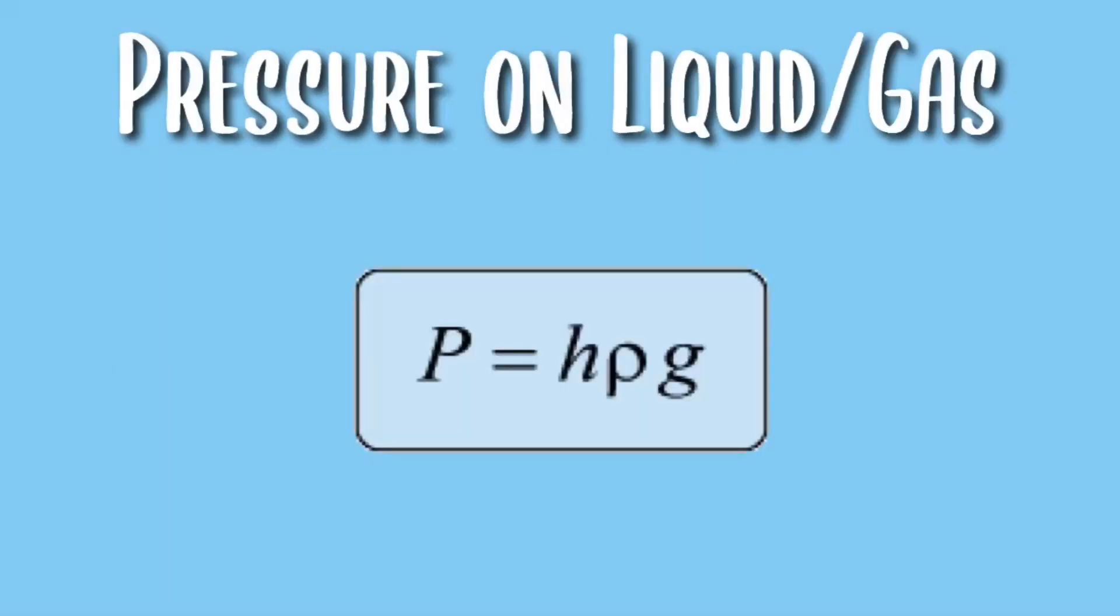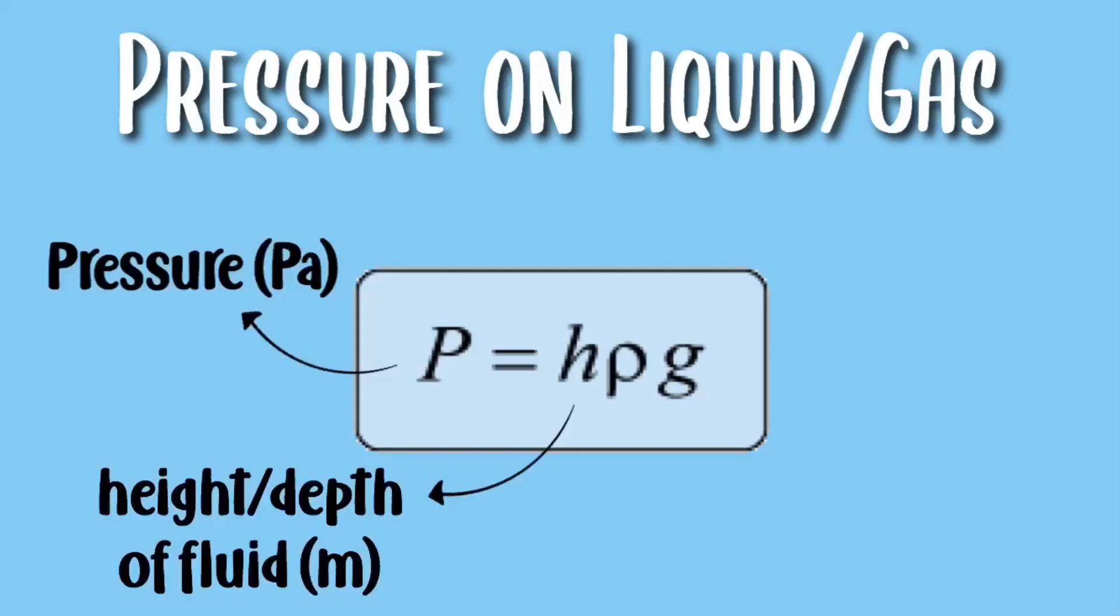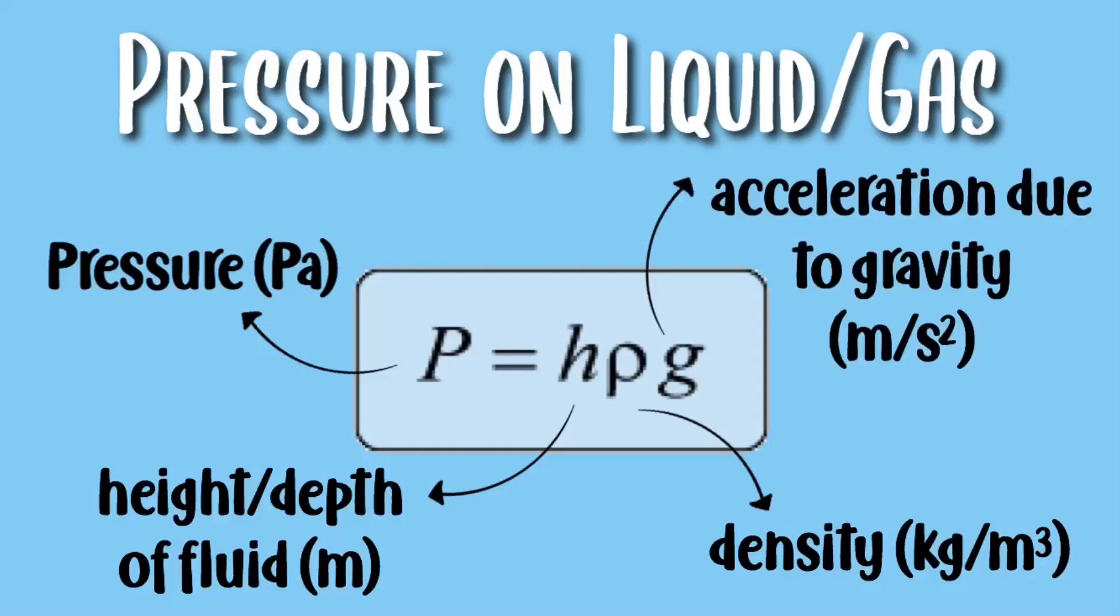Now let's talk about the pressure on liquid and gas. P is your pressure which is measured in pascal. Your h is your height or your depth of fluid which is measured in meters. Rho is your density which is measured in kilograms per meter cube. Your g is the acceleration due to gravity which is measured in meters per second square.